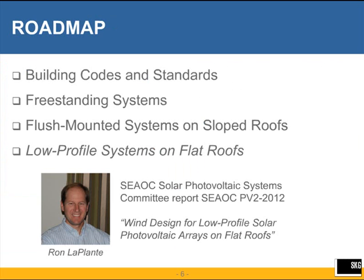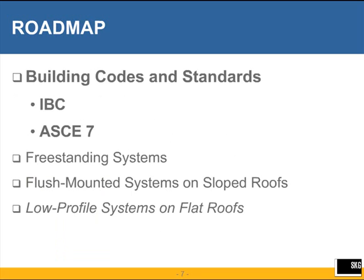In the first session, I will be discussing building codes and standards — looking at what we currently have and thinking about what we need and can apply. Then we'll specifically look at guidelines for freestanding systems and flush-mounted systems on sloped roofs, like residential construction. The second sessions will feature Ron LaPlant, discussing the SEAC committee report covering low-profile systems on flat roofs. The building codes and standards we'll look at today are the IBC and ASCE 7. The California Building Code also has something to say on the topic, which Ron gets into in his sessions.